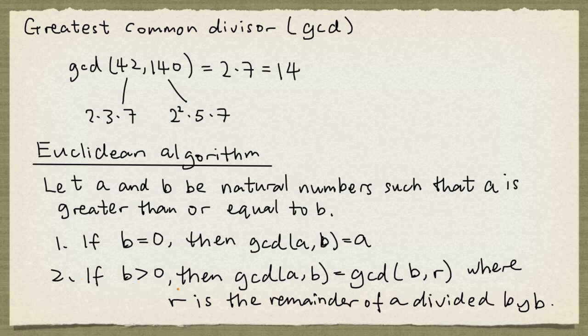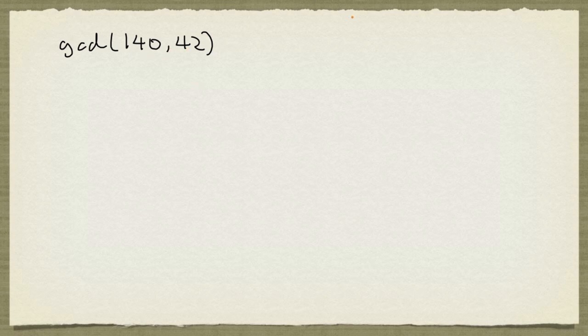According to the second observation, we can first find the remainder of 140 divided by 42. So let's do some long division here. So 42 goes into 140 three times with some remainder, and the remainder is going to be 14.